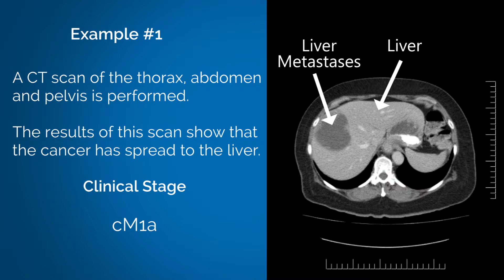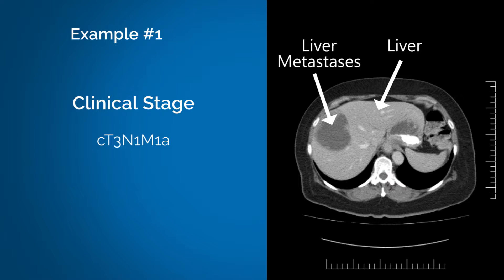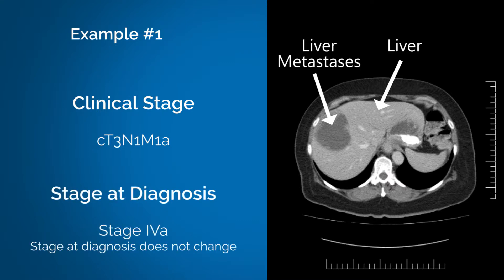Therefore, the patient's cancer classification is cT3N1M1A, and their stage at diagnosis is grouped as stage 4A. Their stage at diagnosis does not change. While the patient's stage does not change, where the patient is on their treatment trajectory may change.